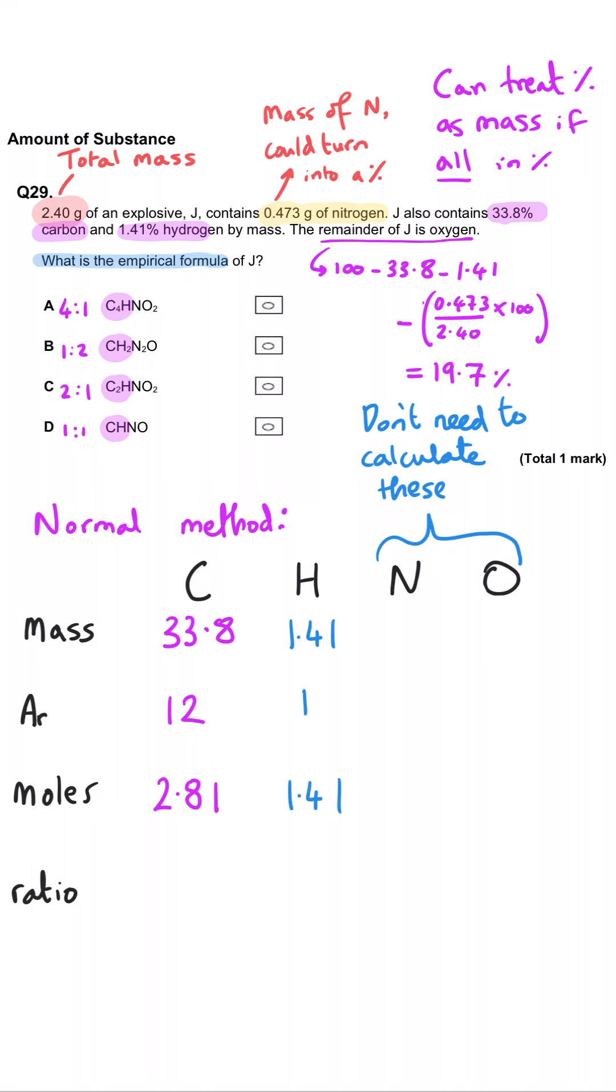So the carbon to hydrogen ratio is 2 to 1, and that means there's two carbons to every one hydrogen, which means that C has to be the correct answer, and we didn't even need to calculate the other elements, but you would get to C in the same way as I'm showing here.